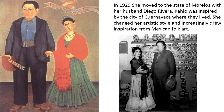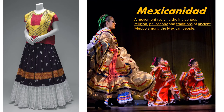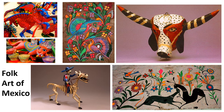In 1929 Frida Kahlo moved to the state of Morelos with her husband Diego Rivera, and while living in the city of Cuernavaca she got new ideas influenced by Mexican folk art. Mexicanidad was a movement going on at the time to revive the indigenous religion, philosophy, and traditions of ancient Mexico, and that includes wearing traditional clothes like you see here.